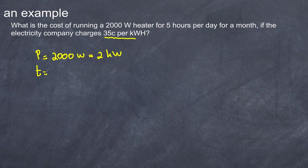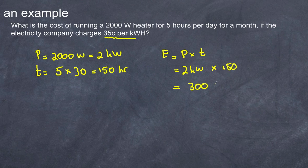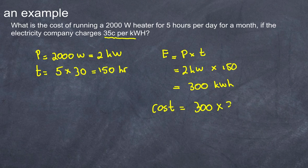The time is already in hours, so we leave it as five hours per day. For a month — thirty days — that's 150 hours total. Energy equals power multiplied by time: two kilowatts multiplied by 150 hours equals 300 kilowatt-hours. The company charges 35 cents per kilowatt-hour, so the cost equals 300 multiplied by 35 cents, or 0.35 dollars.